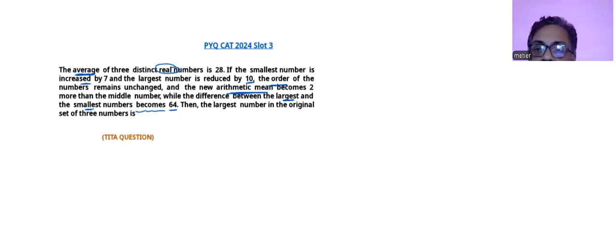The original three numbers, their average is 28. The sum will be 28 into 3, which is 84. This will be your equation number one.